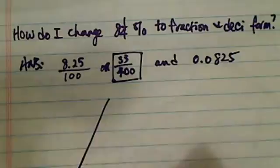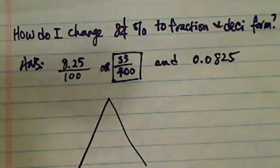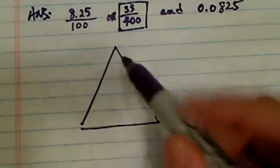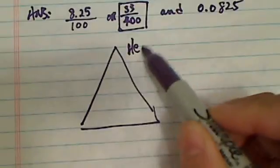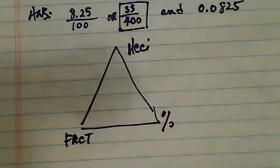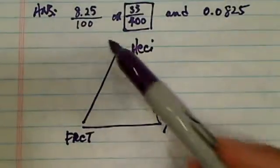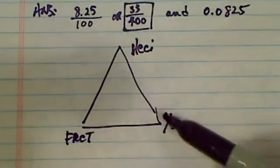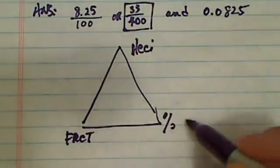This is actually a pretty important concept. When you're changing a number between the decimal, the percentage, and the fraction, to be able to go between all those three triangles, three sides, are very important. So let's start over here.